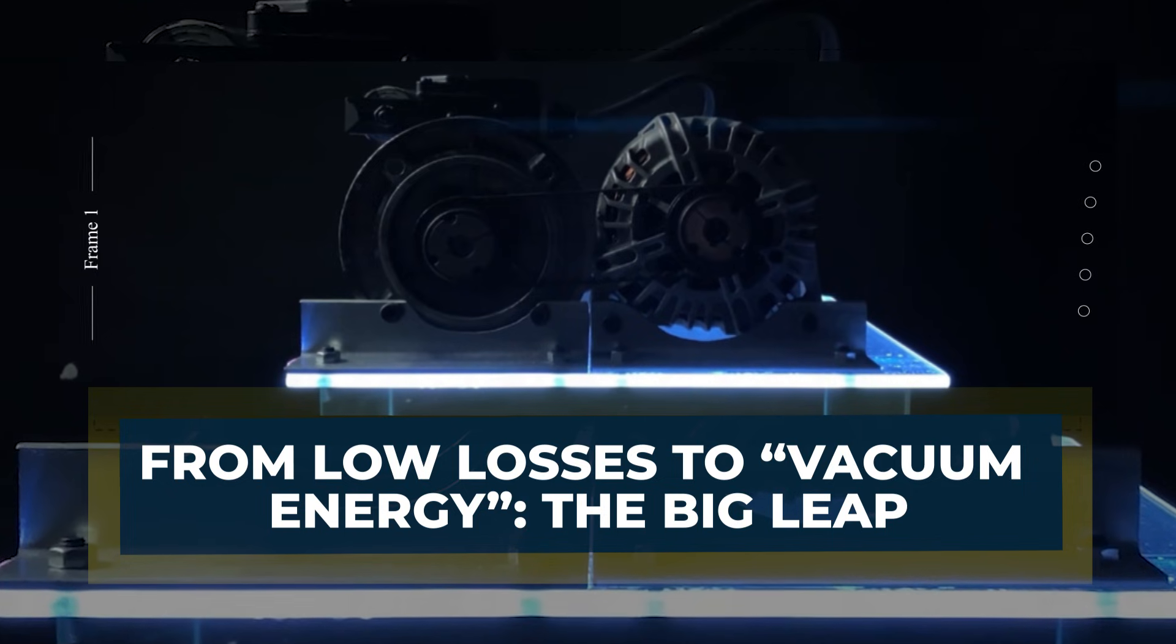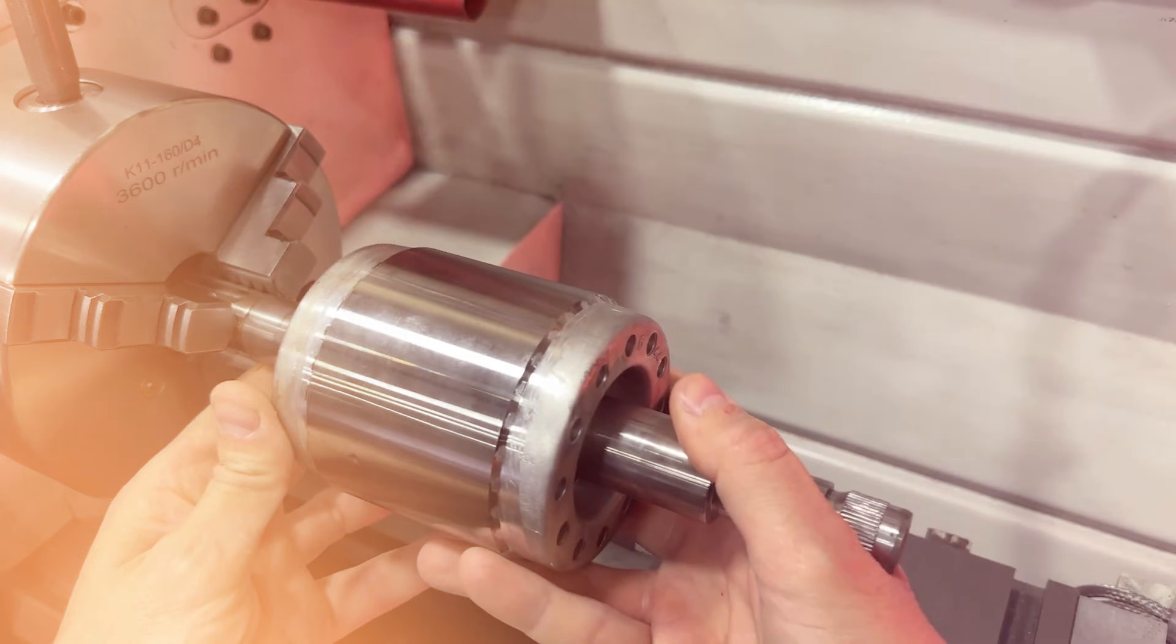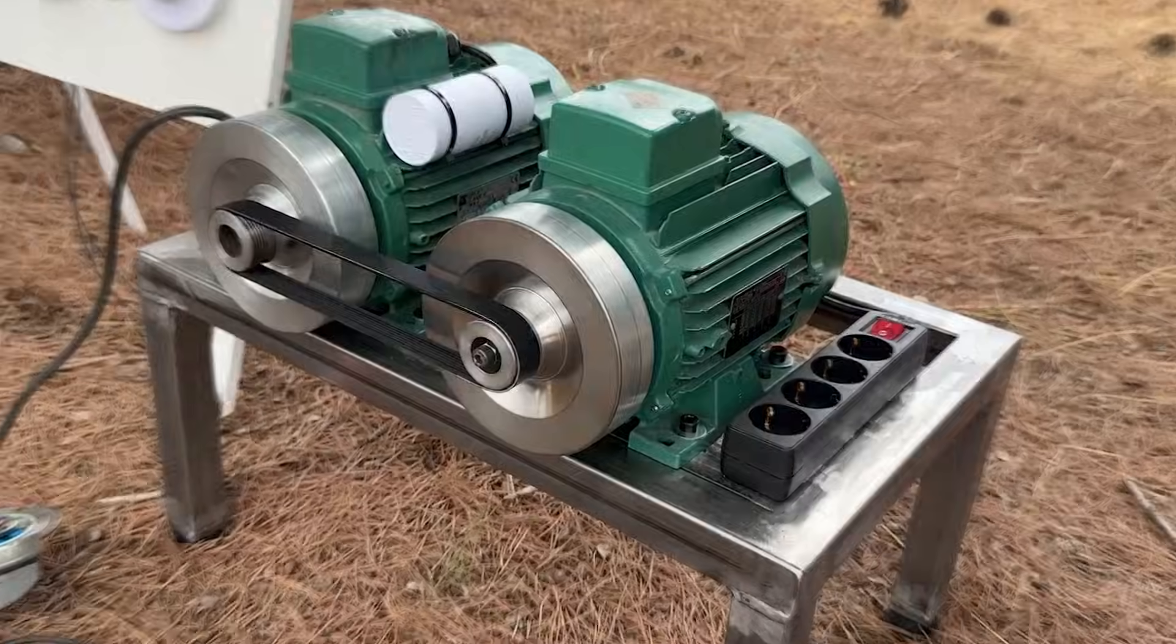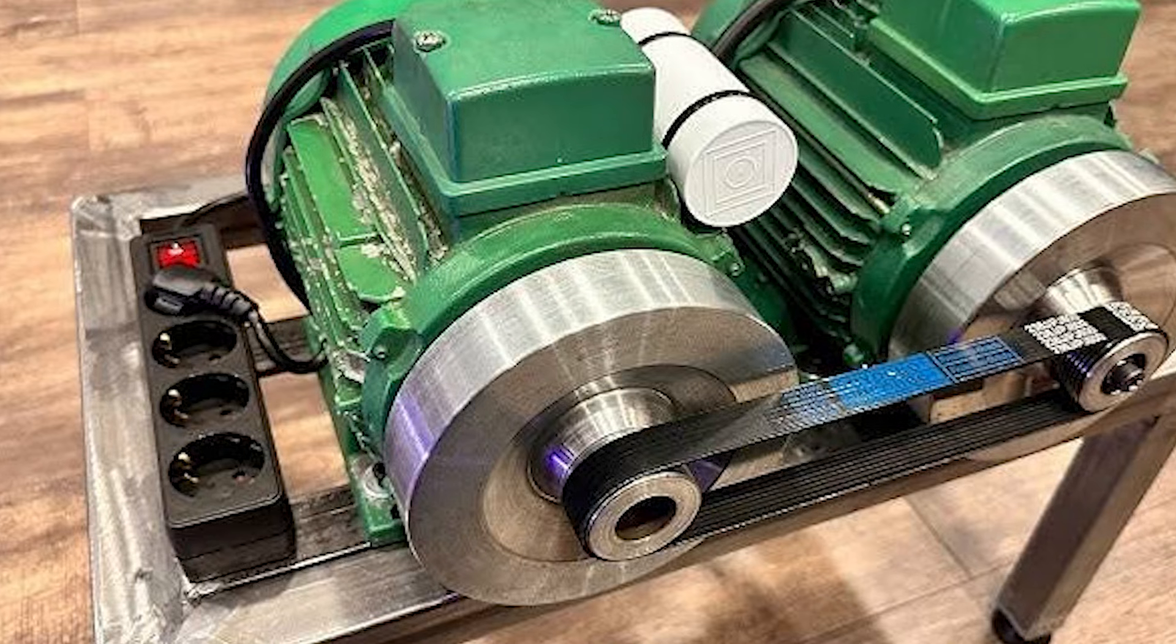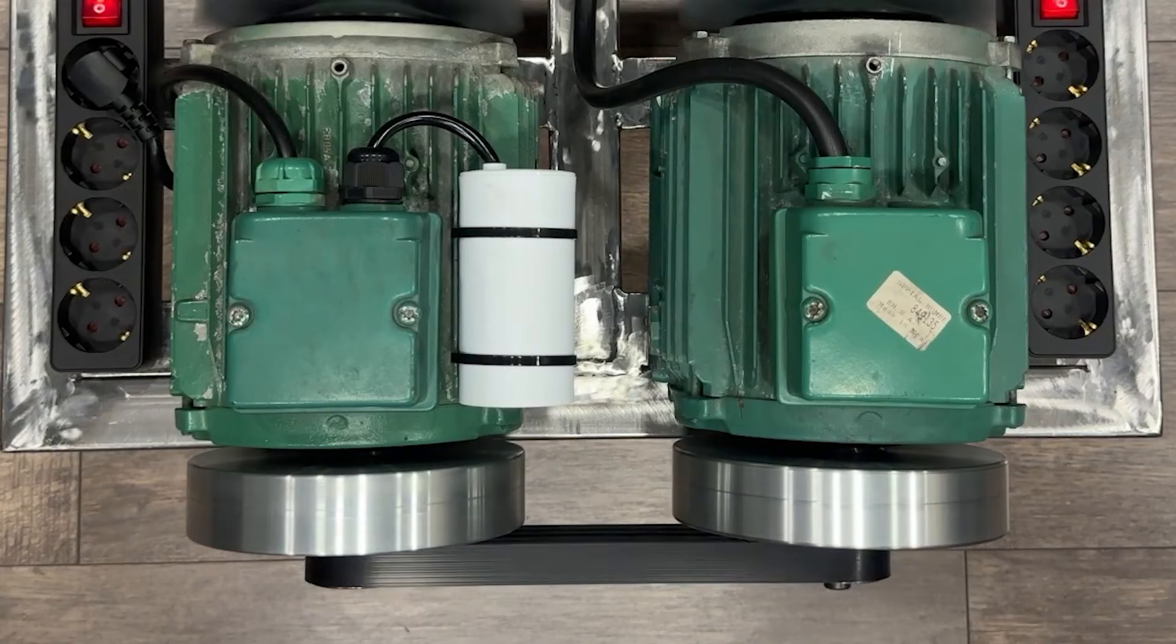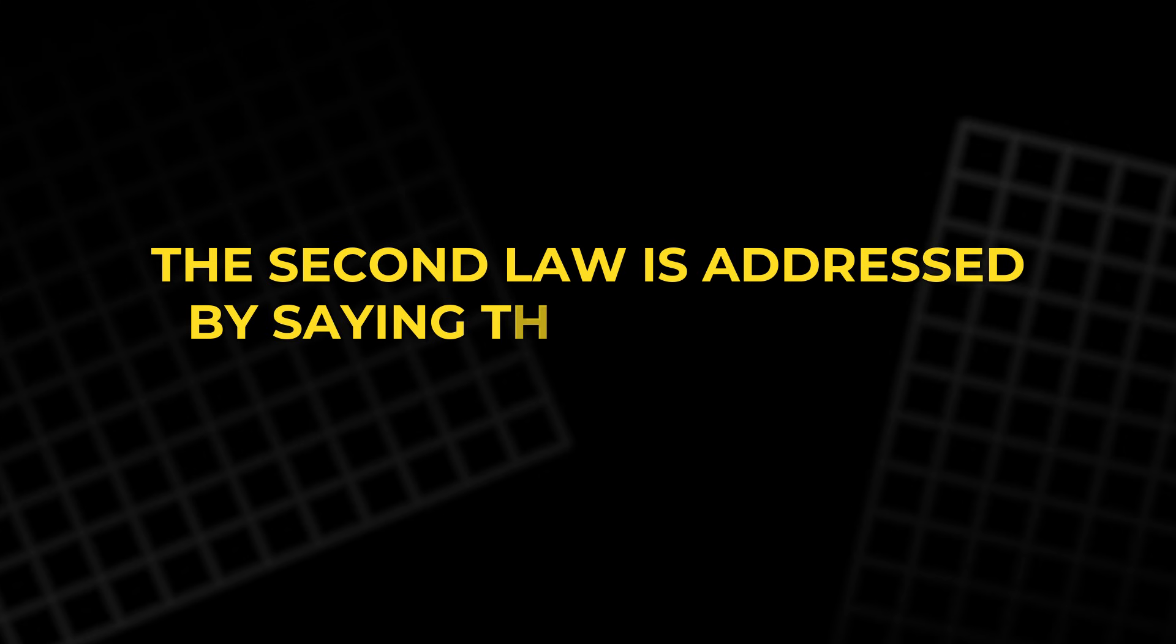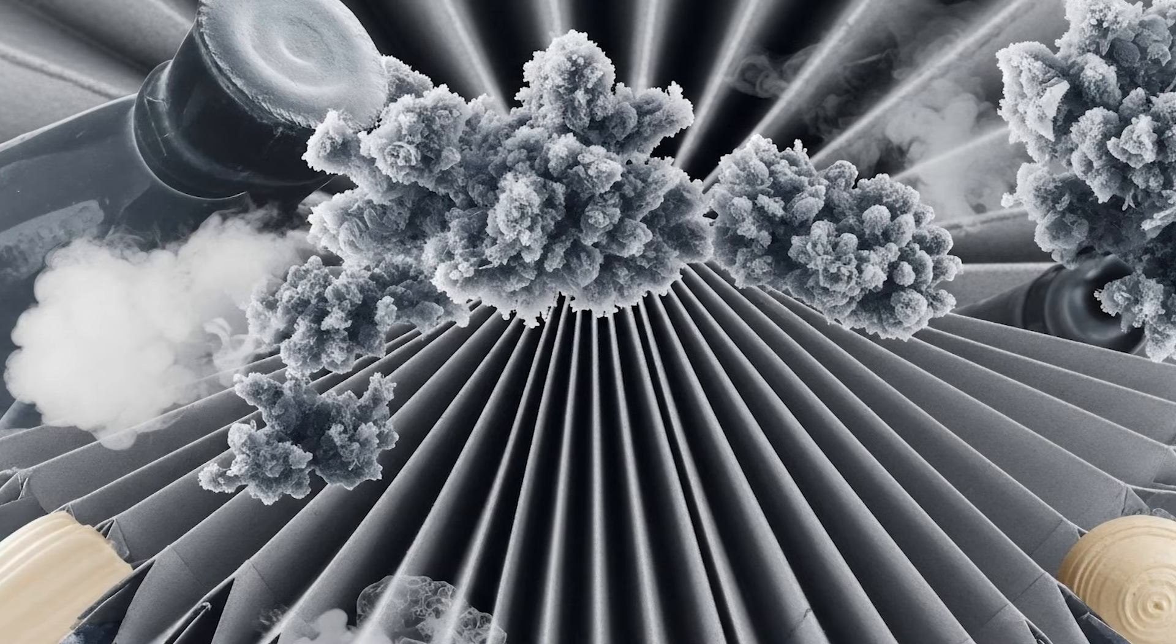From low losses to vacuum energy, the big leap. After the rotor argument, the narrative makes a much bigger leap. It says the system is not only low loss, but also open to an external reservoir. The proposed reservoir is the electromagnetic vacuum, sometimes described as zero-point fluctuations in quantum electrodynamics. According to the claim, the machine does not break the first law because it does not create energy. Instead, it extracts energy from fluctuations, using coherence and asymmetry to turn tiny random motion into usable work. The second law is addressed by saying the system is not closed, so entropy can be exported while work is extracted.